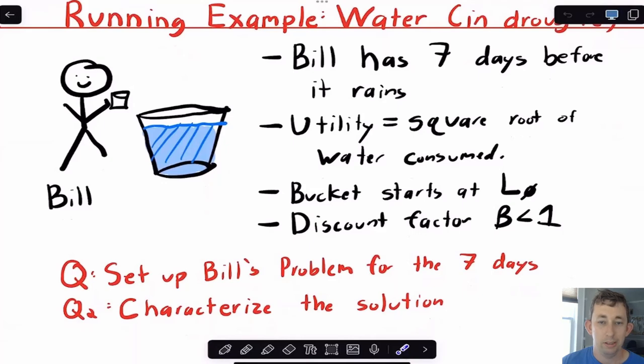We're going to start talking about this running example, which of course is going to involve Bill. Bill has some water in this bucket and has seven days before it rains again. He's got to figure out how much water to take out every day to drink. We're going to say that Bill's utility is the square root of how much water he drinks on any given day. When he starts the week, the bucket is at some level of water, we'll call it L0. Bill discounts the future with some discount factor beta.